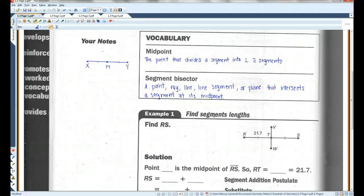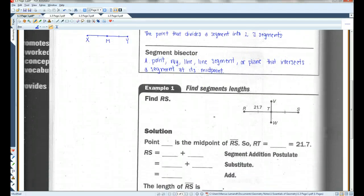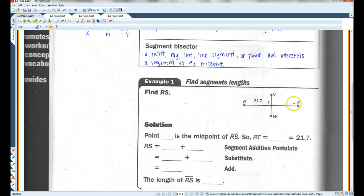So for example, here we're supposed to find RS. Remember, this little dash means that this is the exact same length as this. We know that T is the midpoint of RS, so RT equals TS. If this is 21.7, this is also going to be 21.7. Both of them equal 21.7.